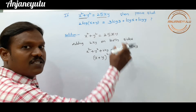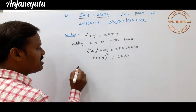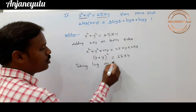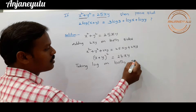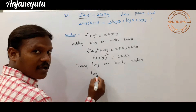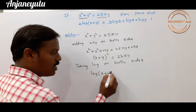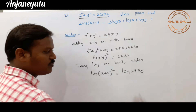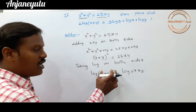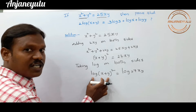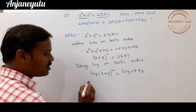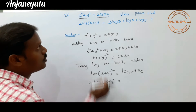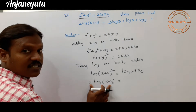So x plus y whole square is equal to 27xy. Taking logarithm on both sides, log(x + y)² equals log(27xy). Using the power rule of logarithms, log(x + y)² becomes 2 log(x + y). So the LHS gives us 2 log(x + y).